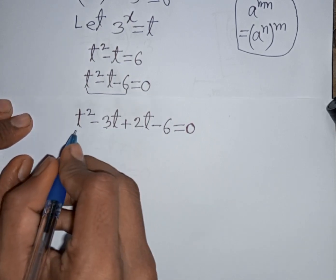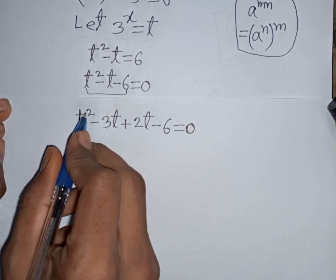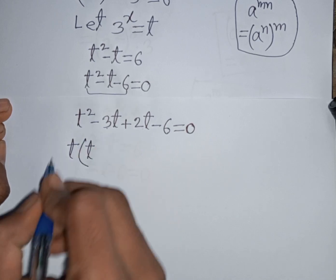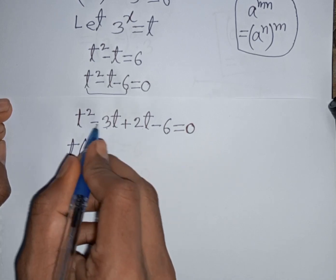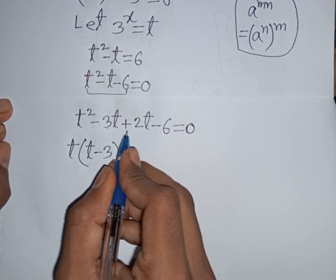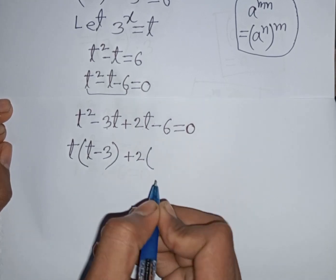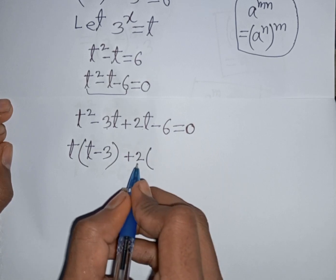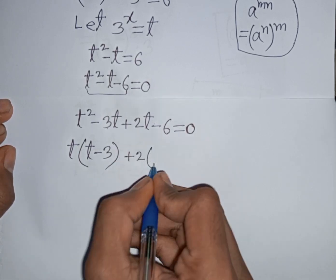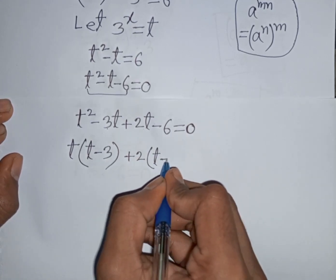Now we take t as common. t is out of the bracket, so t square divided by t gives t, then minus 3t divided by t gives minus 3, bracket close. Then plus 2 is common, so plus 2t divided by 2 gives t, then minus 2t divided by 2 gives minus 3, bracket close, is equal to 0.